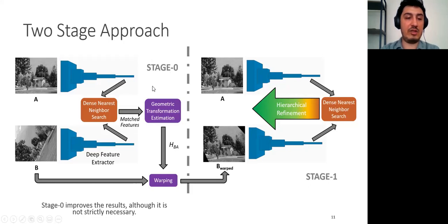In this stage, DFM basically performs a coarse transformation estimation using matches that come from only terminal layers, which have better semantic information. Hence, these features are robust to extreme viewpoint change. Utilizing this coarse homography, DFM warps the second image and roughly aligns it with the first image. Then, we feed stage 1 with image A and the warped version of image B. We have observed that this kind of approach improves the results, although it is not strictly necessary.